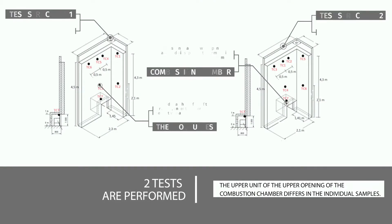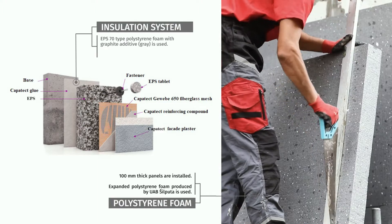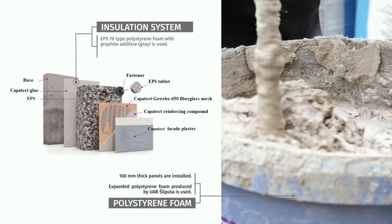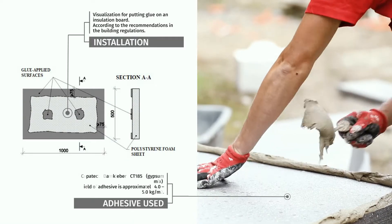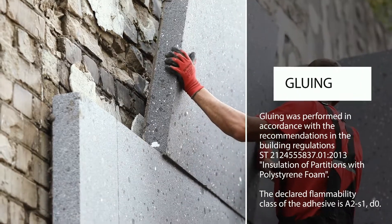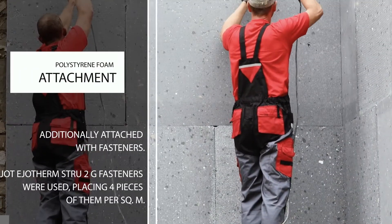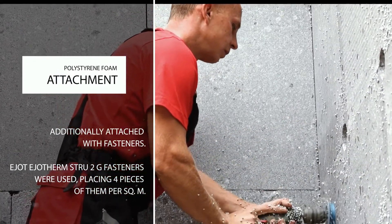Two tests are performed. A fragment of an existing building with silicate brick walls is used as the test structure. EPS 70 type 100 mm polystyrene foam with graphite additive is used for the insulation system. Capotec Dumb Clever adhesive is used to attach the insulation boards, in accordance with building regulations recommendations. EPS boards are additionally attached with EJOT fasteners.